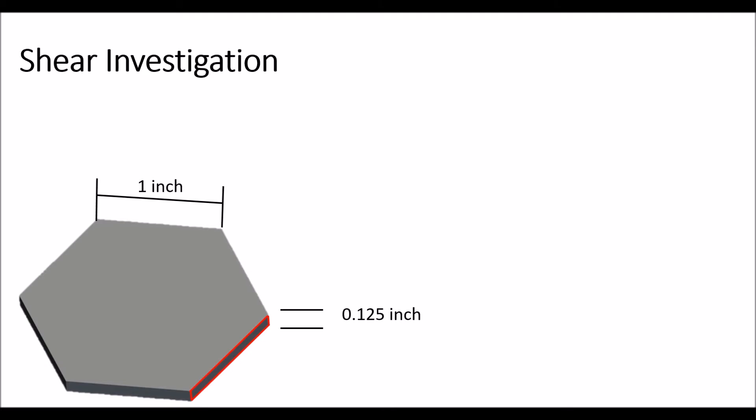It has dimensions of 1 inch by 0.125 inches so the total shear area will be 6 times 0.125 inch times 1 inch and that will be equal to 0.75 inches squared.